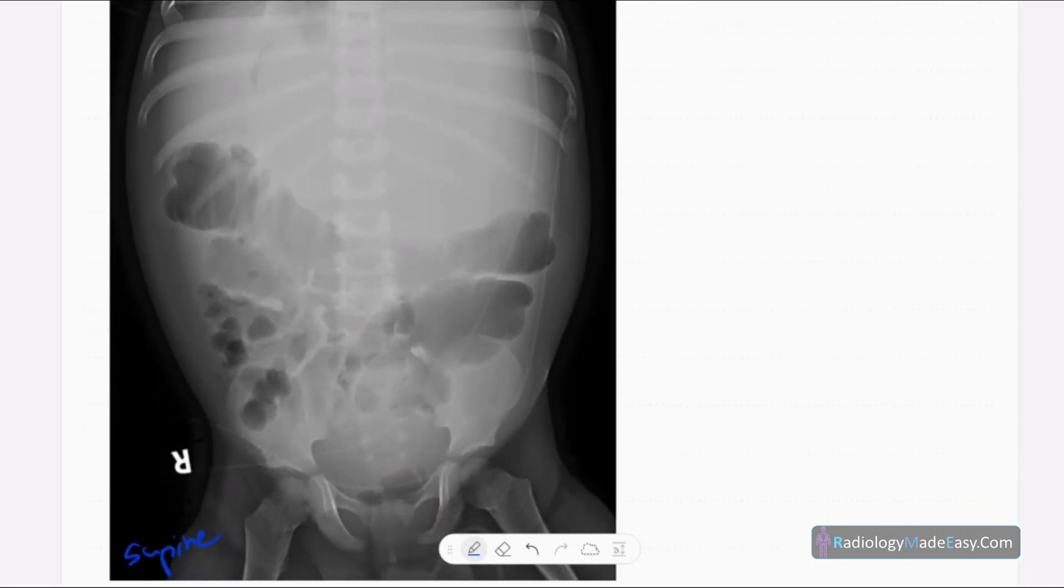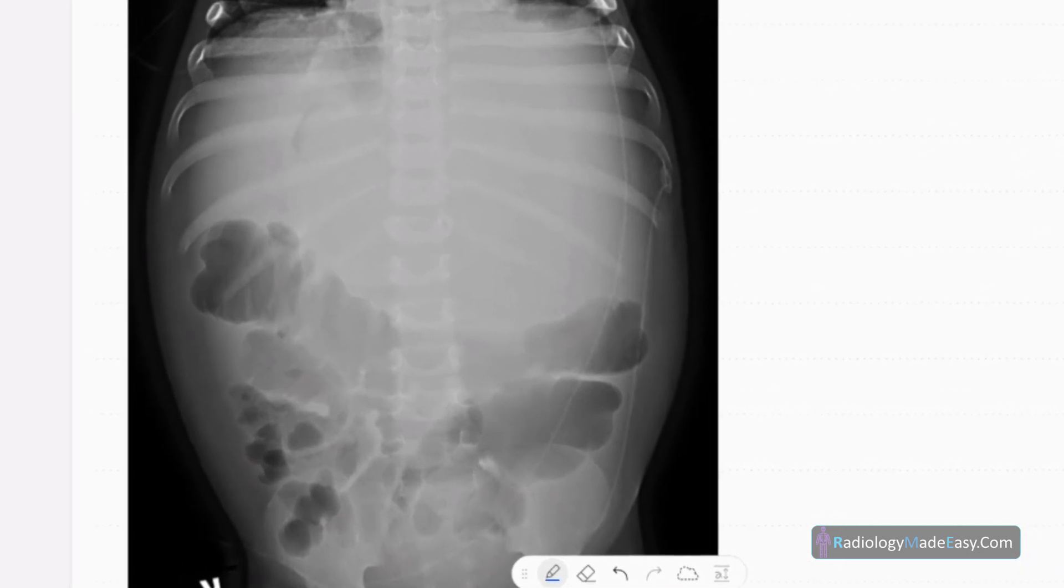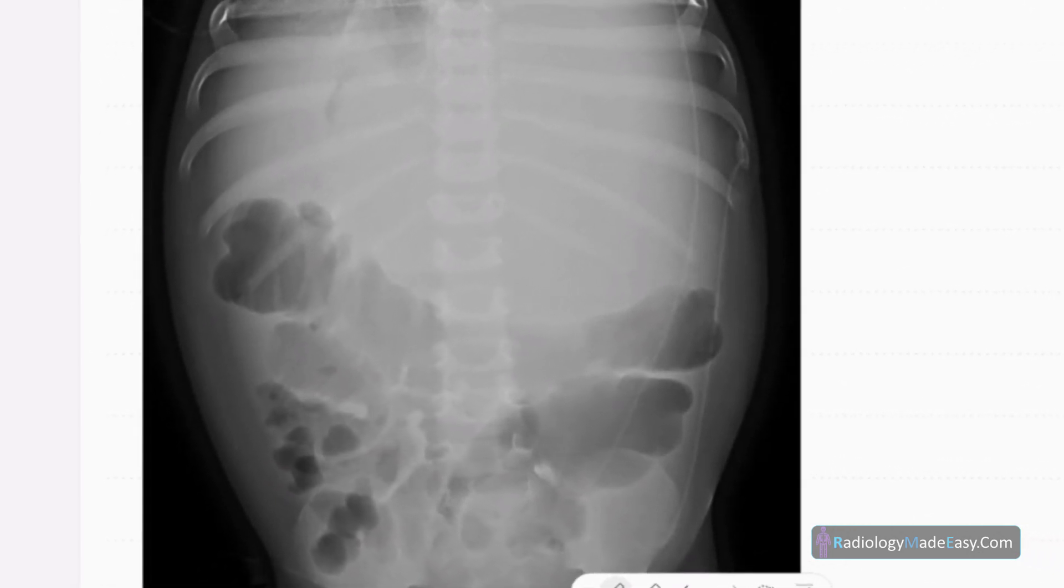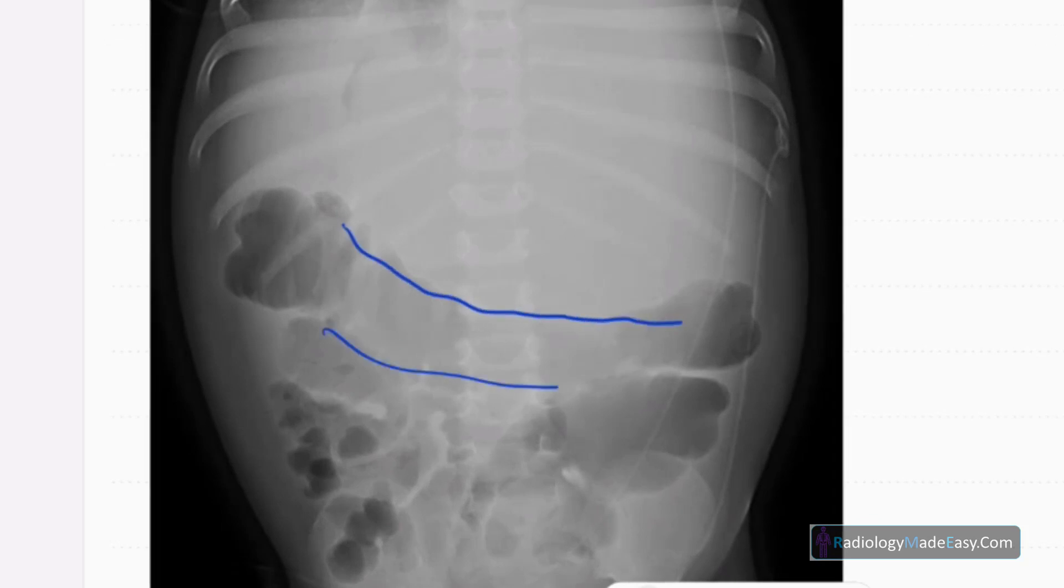So this is the anterior posterior radiograph of the abdomen in this pediatric patient, which is a supine x-ray. When you see closely, you can see displacement of the transverse colon here. It is displaced inferior, it's not in the normal position.